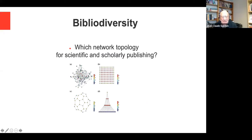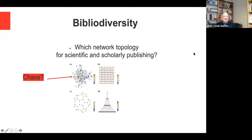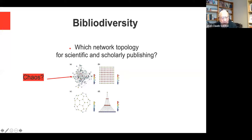Thank you very much, Kathleen, for the introduction and the opportunity to speak today. Welcome to everybody watching this seminar. We have a series of diagrams that can show us what networks can exist and how they can exist — each one exhibits different characteristics, problems, and possibilities. The first one I might show is what I call chaos. If you look at the history of scientific communication and publishing in the 18th and 19th centuries, for example, you might say that this was the dominant system.